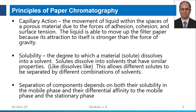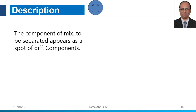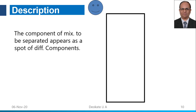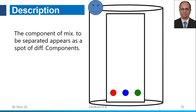Separation of components depends on their solubility in the mobile phase and their differential affinity for the mobile and stationary phases. In chromatography, the components appear as spots at different levels on the chromatographic paper. A paper of appropriate size is cut, a baseline is marked, and spots of reference and sample are applied. The paper is placed into a chamber saturated with the mobile phase environment.